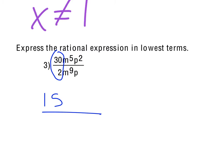Notice the m's, we have a 5 and a 9. Well, 9 is more than 5, so the m's will end up in the denominator, and to a 4th degree, because 9 is 4 more than 5.